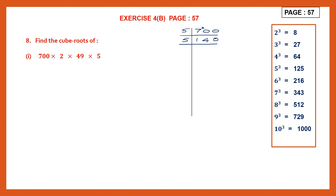Now let's take 14. 5 twos are 10, there is 4 left, 5 eights are 40. Now it's an even number, let's use 2. 2 ones are 2, 2 fours are 8. Continue — 2 into 7 is 14. Now we use 7. 7 ones are 7. So now we've got all the prime factors of 700.